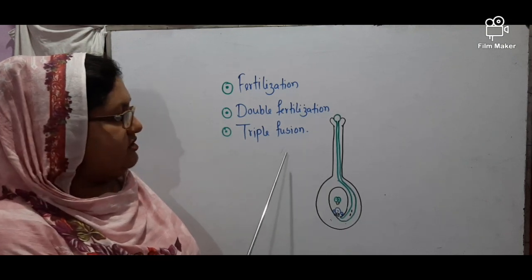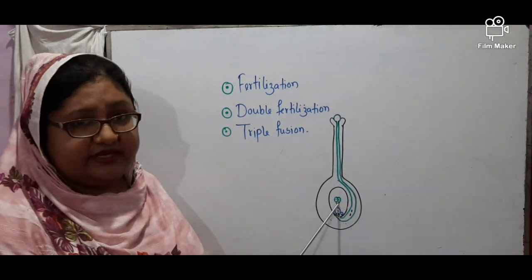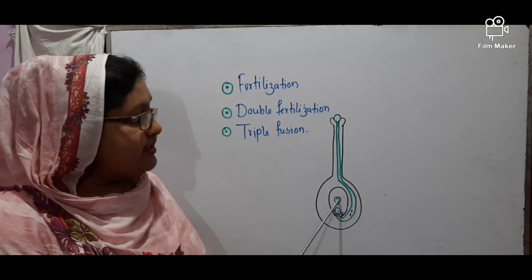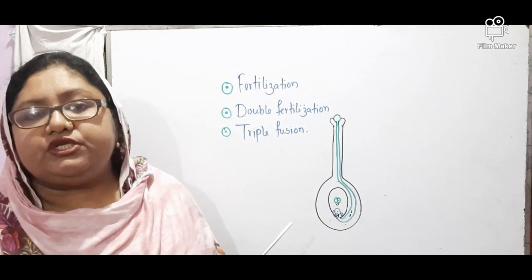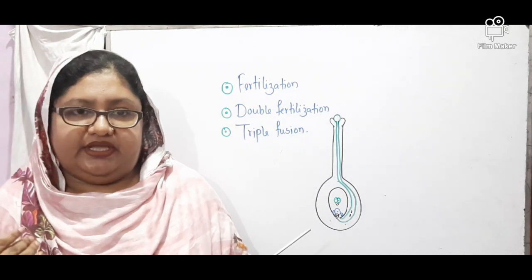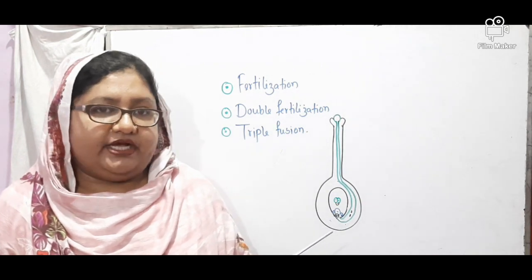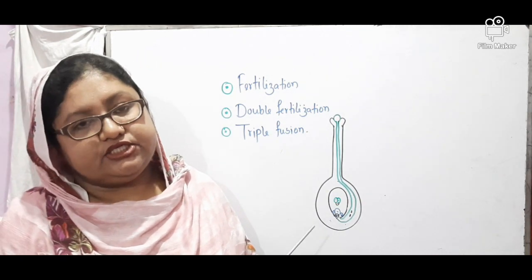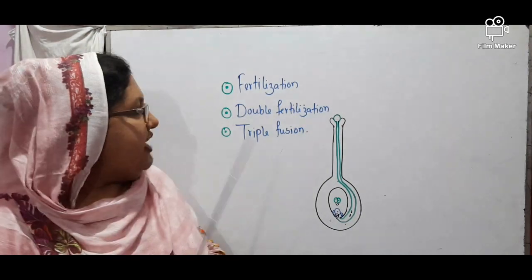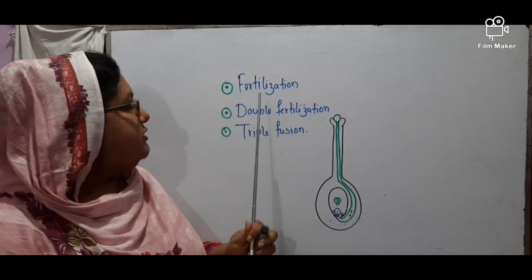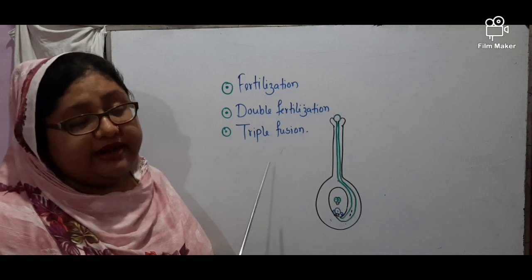Triple fusion means the fusion of a male gamete with two secondary nuclei is called triple fusion. From today's topic, you will be able to explain Megasporogenesis and its stages, Microsporogenesis and the stages of development of male gametophyte, and finally Fertilization, Double Fertilization, and Triple Fusion.